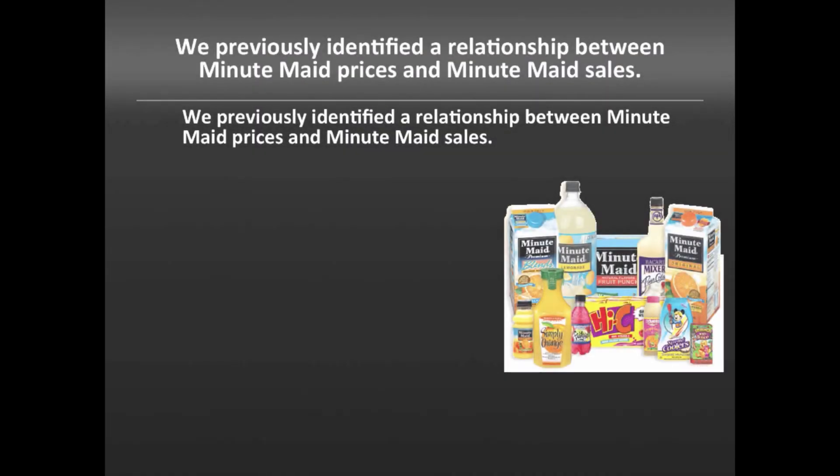So in a previous video, we used the Minute Maid orange juice data set, and we'll continue to use that here. We identified a relationship between Minute Maid prices and Minute Maid sales. Specifically, we said that sales is a function of some constant, beta zero, plus beta one, a coefficient associated with the influence of price on sales, times price itself. So if we plug everything in, we say sales is this function.